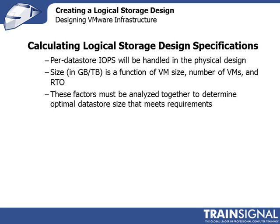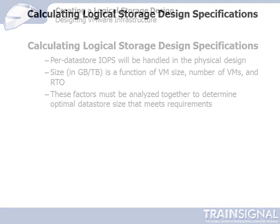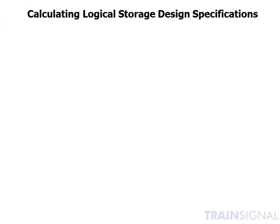Let's take a look at how we calculate these values and arrive at an optimal data store size using the values we've gathered and collected. There are two basic calculations to consider. The first calculation is around how the RPO and RTO play in, and the second is based on VM size.